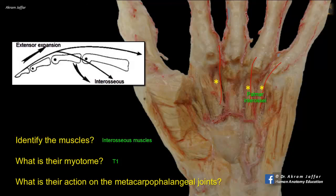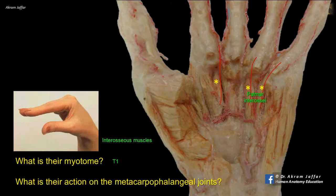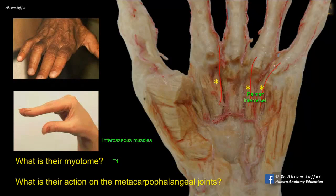When the palmar and dorsal interossei contract together, adduction and abduction are canceled out, and the interossei act to flex the metacarpophalangeal joint and simultaneously extend the interphalangeal joints through their attachment to the extensor expansion, similar to the lumbricals. Paralysis of the interossei results in the reverse action — extension of the metacarpophalangeal joint and flexion of the interphalangeal joint, resulting in claw hand deformity.